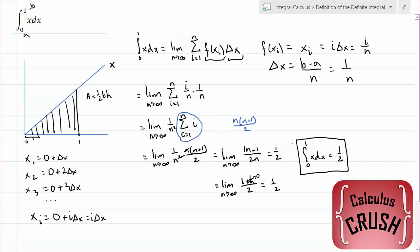Now let's just confirm that. Since we were only taking the area of a triangle, we didn't even really need to use integral calculus to do that. We've got the base here, which is 1. We've got the height here, which is also 1.